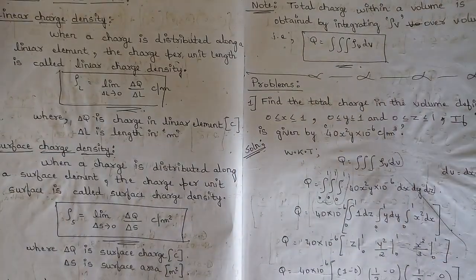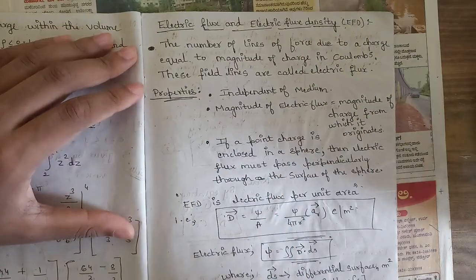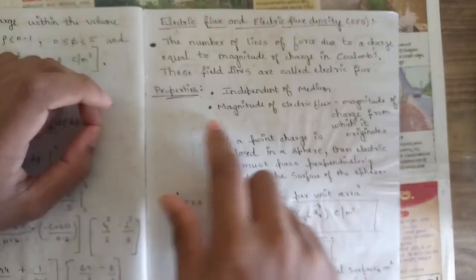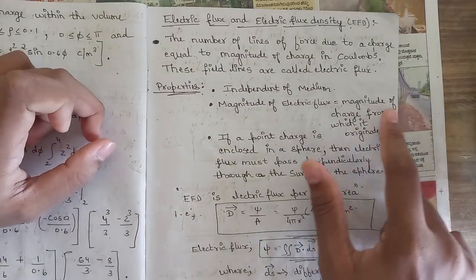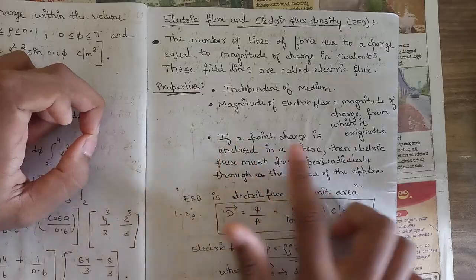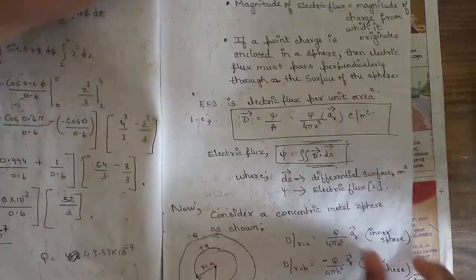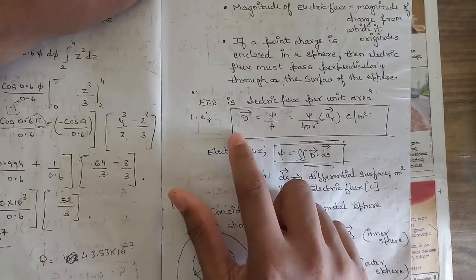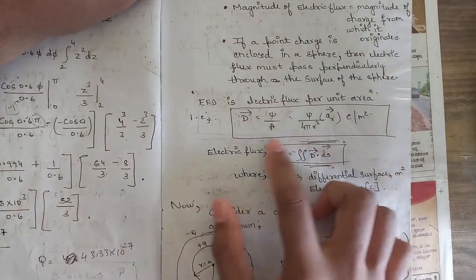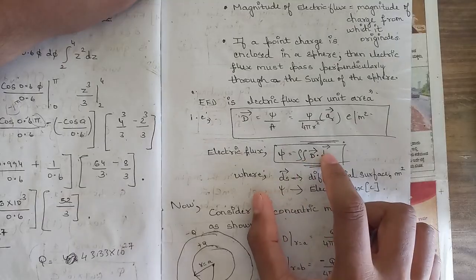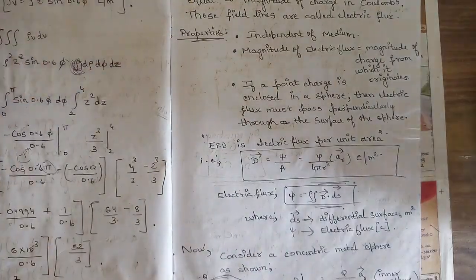Another important concept is electric flux and electric flux density. Key properties: it is independent of medium; the magnitude of electric flux equals the magnitude of the charge from which it originates; if a point charge is enclosed in a sphere, the flux passes perpendicular to the sphere's surface. The expression is D = ψ/A, and electric flux is ψ = ∮ D · dS, where dS is the differential surface.